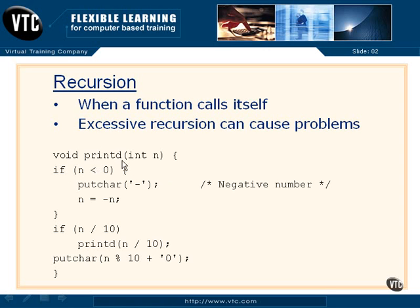Here's what printd is going to do with the integer it receives. If the number it's being asked to print is less than zero, the first thing we'll do is output a minus sign, and then we'll flip n — we'll say n equals negative n, which will flip it over to a positive. Now we get out of that if and start working on a positive number.